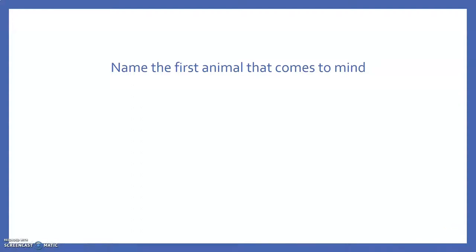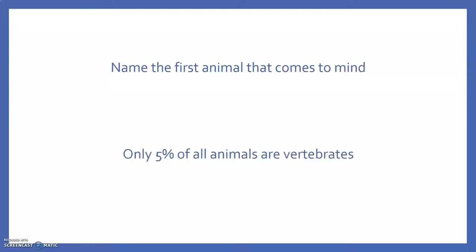I want you to pause the video and think of the first animal that comes into your mind. Now, what is that animal? More than likely it's something that is cute and furry, like a dog or a cat or a horse — all of these would be considered vertebrates, and mammals to be more specific. But interestingly, only five percent of all the animals on earth are actually vertebrates, and there is a lot of diversity within Kingdom Animalia beyond just cats and dogs.